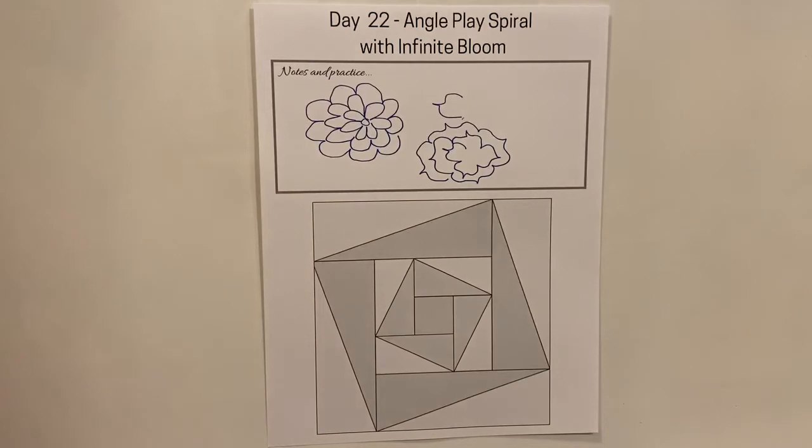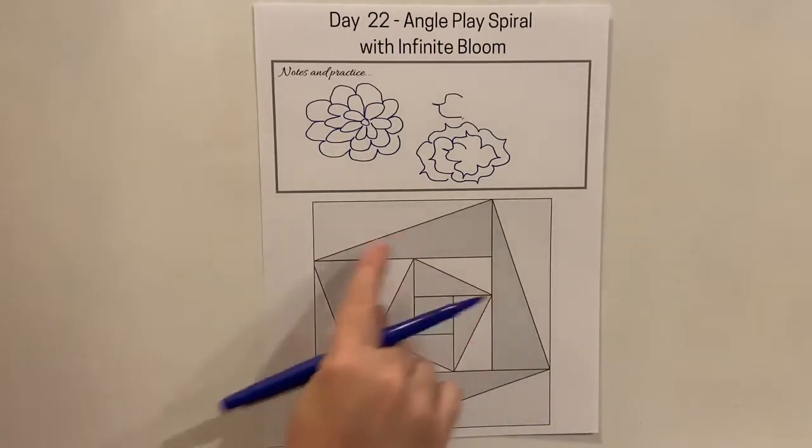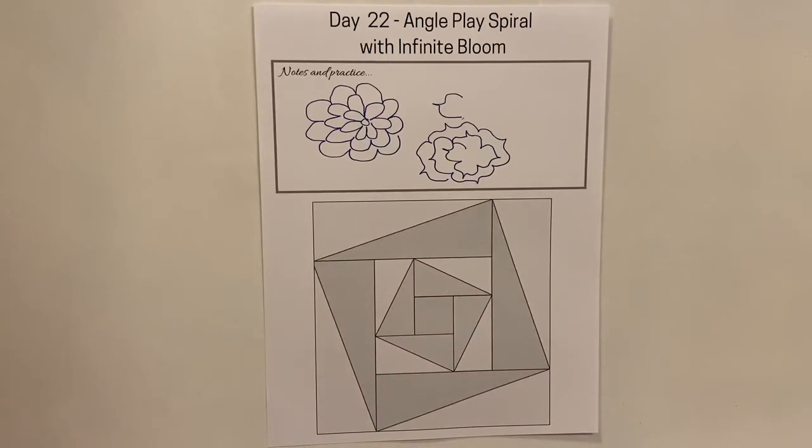So I'm going to demonstrate both of those petal styles in the spiral quilt block. And this is an angle play block that is made of half rectangle triangles. So I like the circular feel of this block.